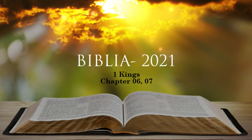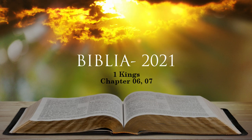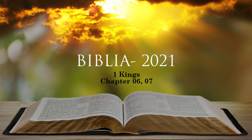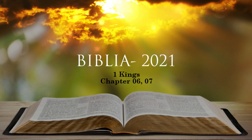In building the temple, only blocks dressed at the quarry were used, and no hammer, chisel, or any other iron tool was heard at the temple site while it was being built. The entrance to the lowest floor was on the south side of the temple. A stairway led up to the middle level and from there to the third.